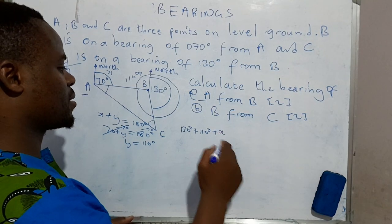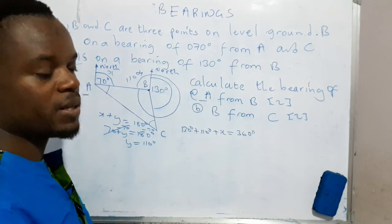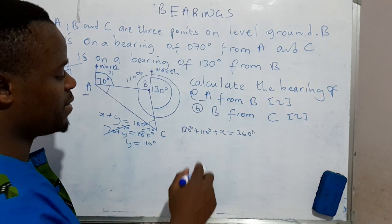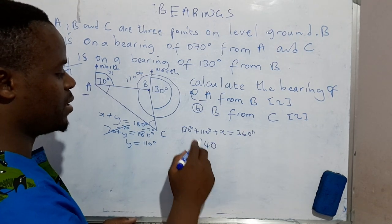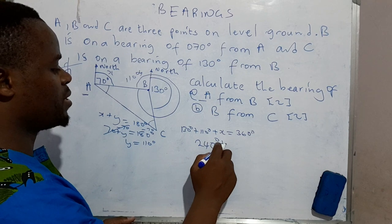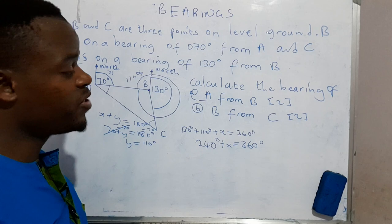So now when we add these two, they'll give us, that's 1 plus 3, that's 4, that's 240 degrees plus x, which is equal to 360 degrees. Our interest is to know the value of angle x.